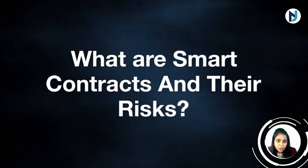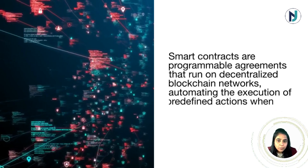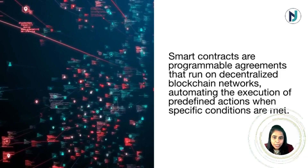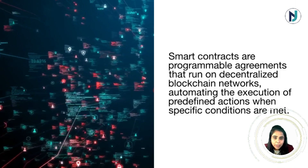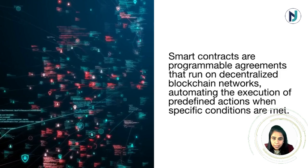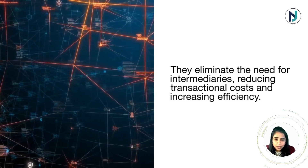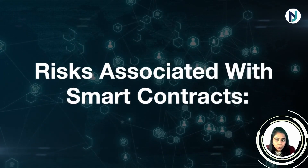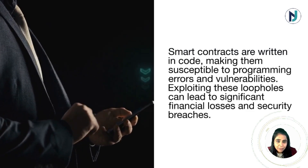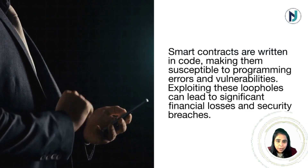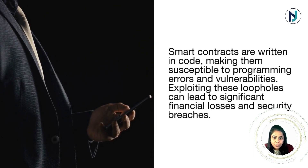Smart contracts are programmable agreements that run on decentralized blockchain networks, automating the execution of predefined actions when specific conditions are met. They eliminate the need for intermediaries, reducing transactional costs and increasing efficiency. A key risk associated with smart contracts is code vulnerability: smart contracts are written in code, making them susceptible to programming errors and vulnerabilities. Exploiting these loopholes can lead to significant financial losses and security breaches.